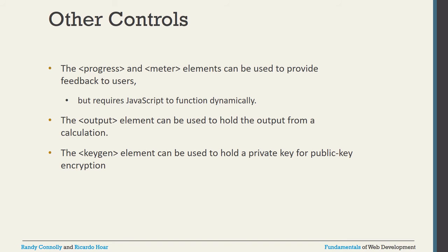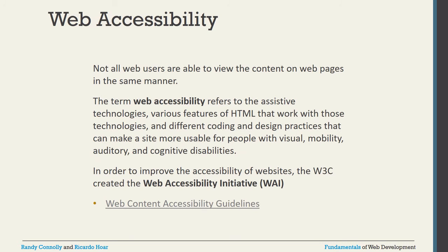Two other very popular controls are the progress element and the meter element. These can be used to provide feedback to the users but require JavaScript to dynamically update. The output element is used to hold the output of a calculation. Another element is keygen — the keygen element can be used to hold a private key for public key encryption, which is part of encrypting values.